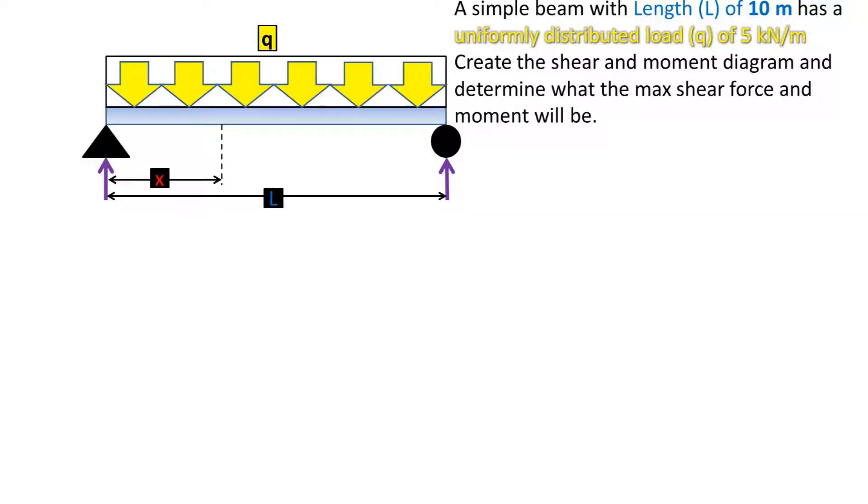In this problem, we have a simple beam, or beam that is resting on two points, with a length of 10 meters and has a uniformly distributed load, or q, of 5 kilonewtons per meter. We want to create the shear and moment diagram and determine what the max shear force will be and the max moment will be.